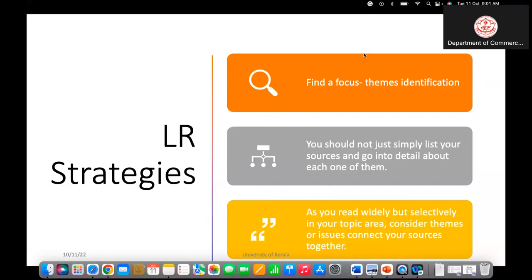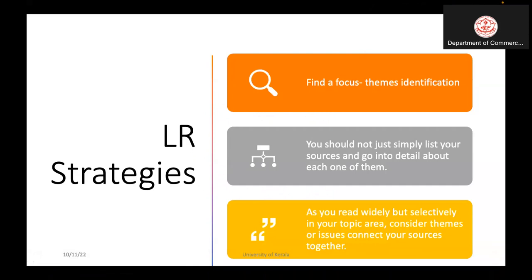In thematic literature reviews, the most important thing is identification of the themes. When we select an area, the themes are to be identified, focused on that area. You should not simply list your sources and go into detail about each one of them. What you need is to read widely and selectively into your topic area, consider themes or issues, and connect your sources together.